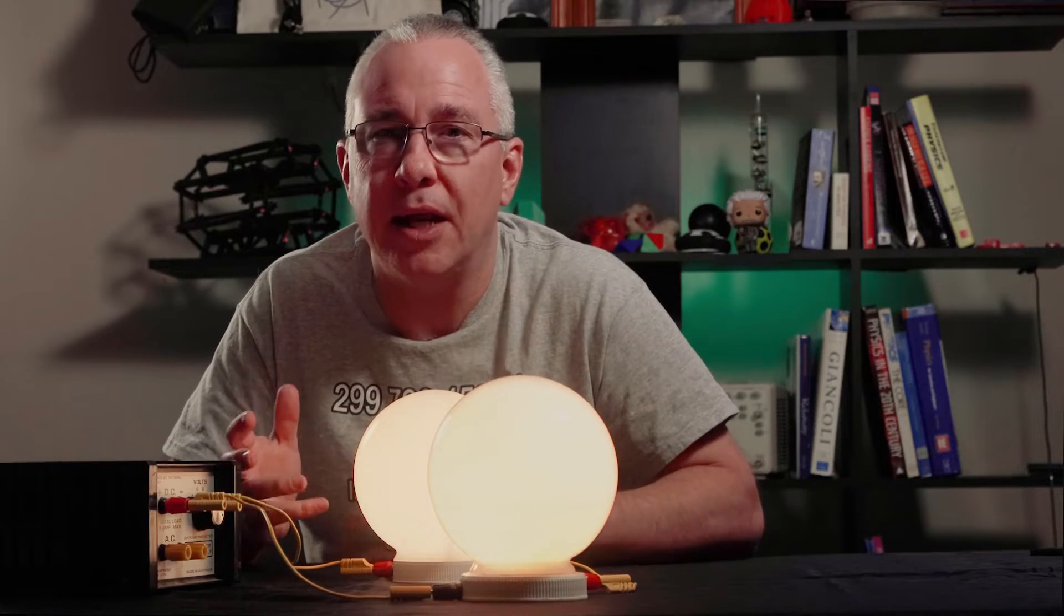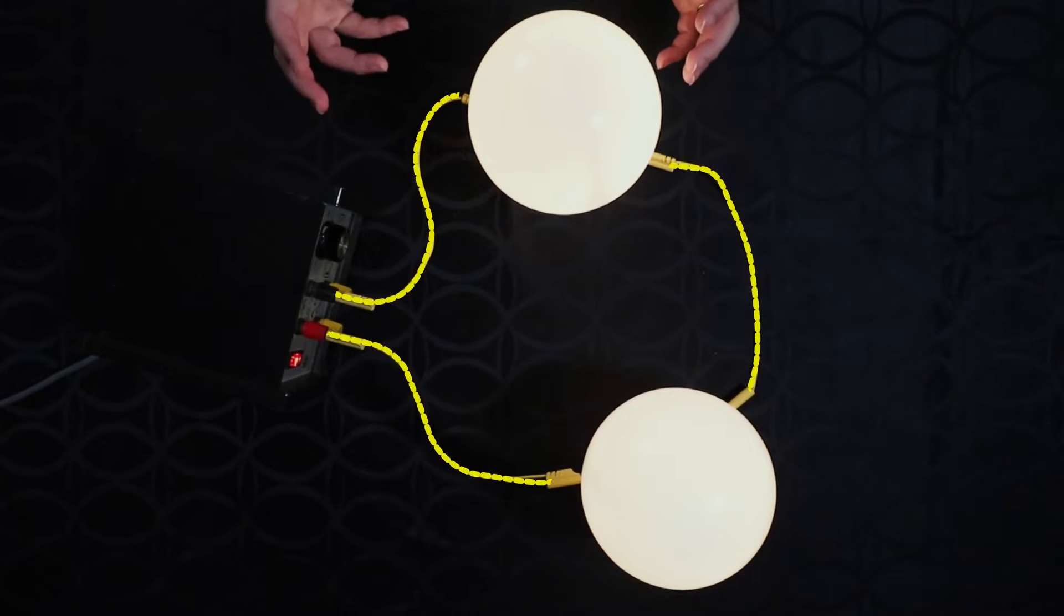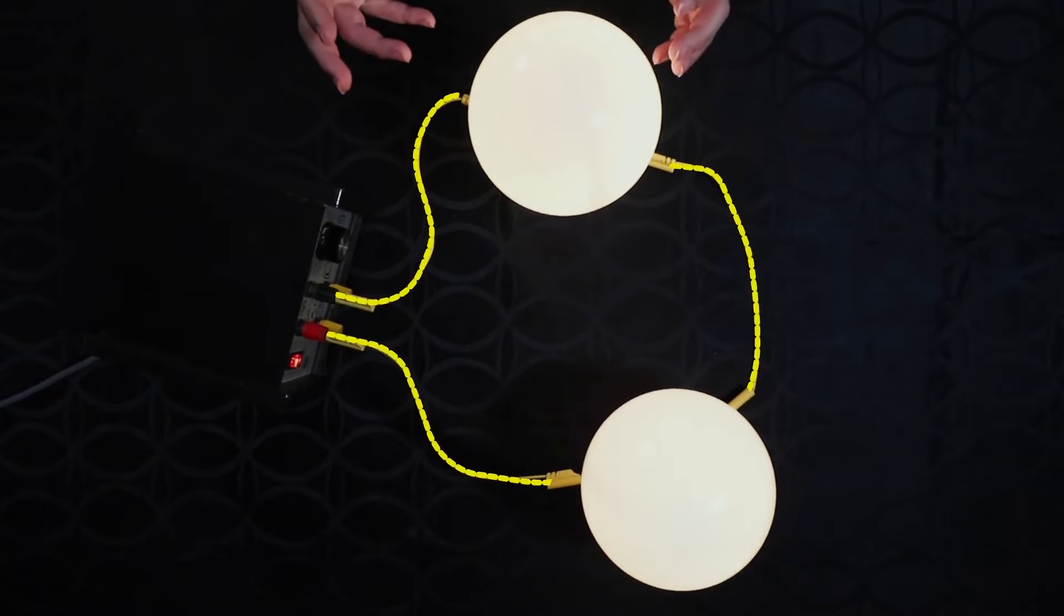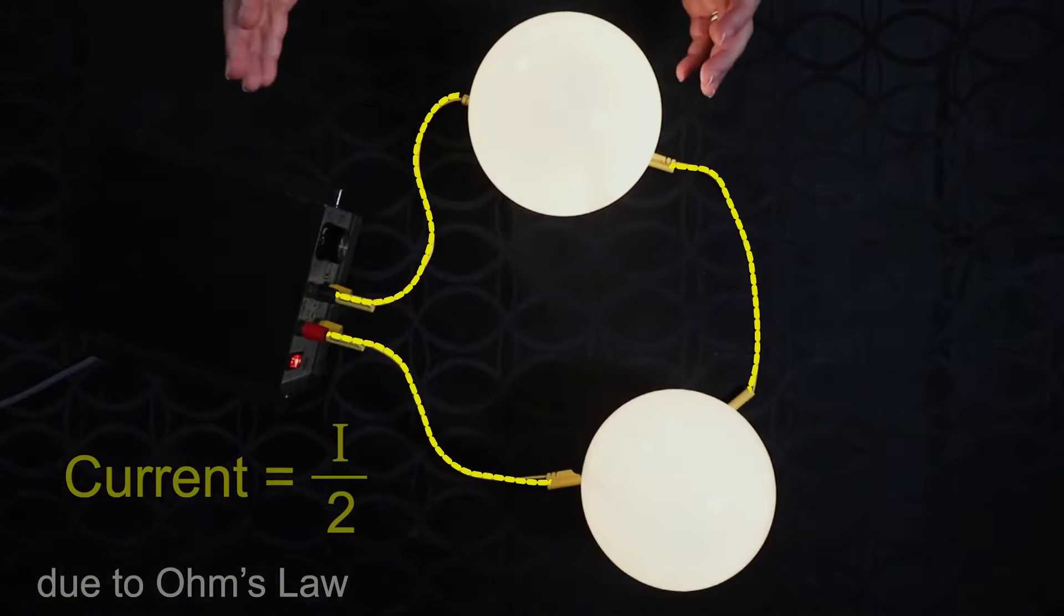What happens when I connect another globe? I've doubled the resistance. So the amount of current drawn from the supply is halved.